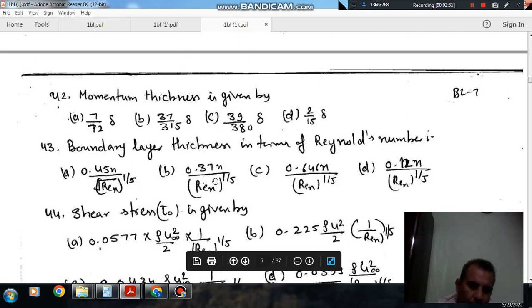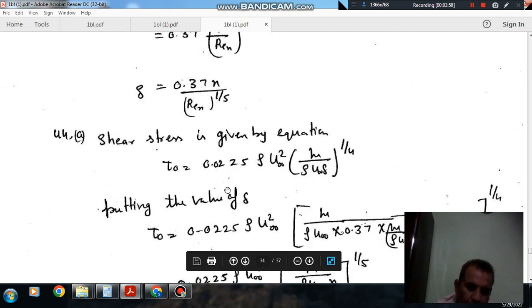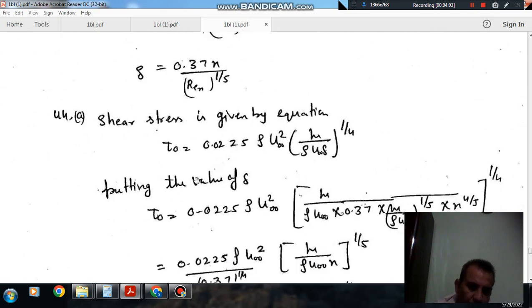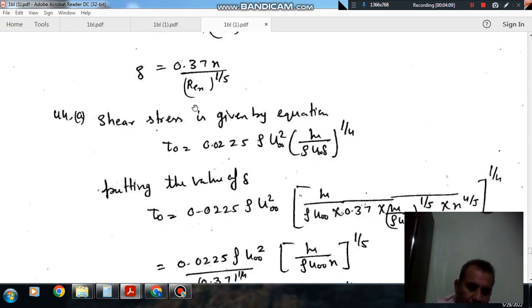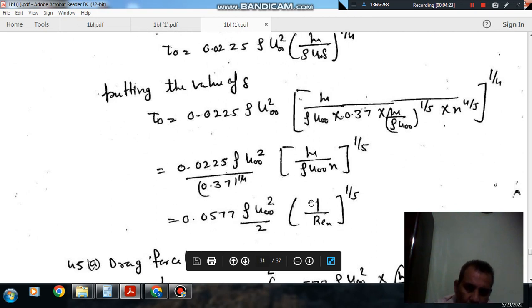Shear stress in the given zone is given as this expression. We put the value of delta. This is not the laminar boundary layer so Newton's law is not applicable, but the shear stress variation is given like this. If we put the value of delta here, then we find tau_0 is 0.0577 rho u_infinity squared times Re_x^(-1/5).